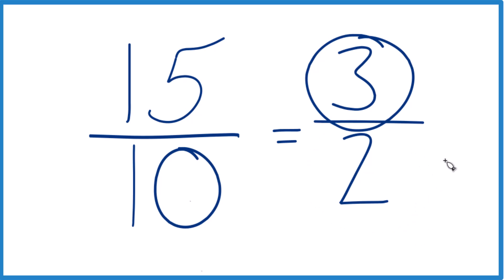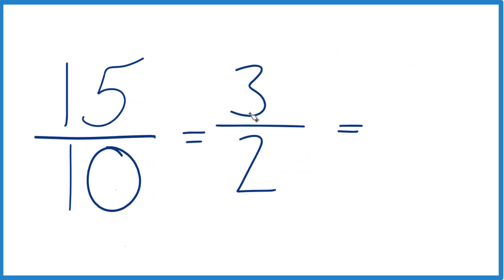Let's write it as a mixed number. So 2 goes into 3. We could say that 1 times 2, that's 2, with 1 left over. And then we keep the denominator the same.